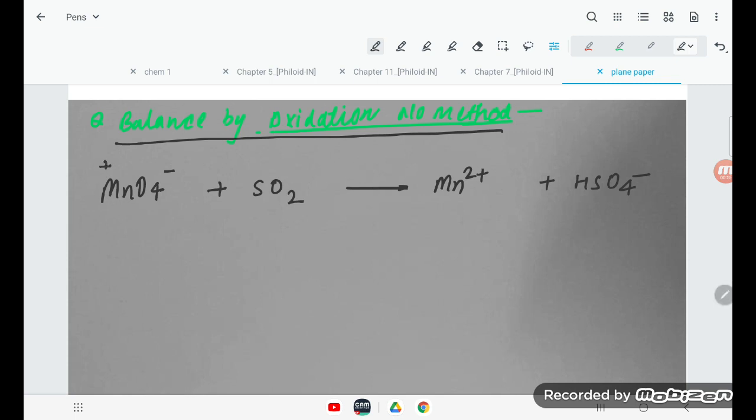Here it will be +7, how? 4 oxygen times -8 plus 1 equals +7. Here sulfur is +4. And here, how much? 4 oxygen times -8 minus 2 hydrogen equals +6 for sulfur. You can calculate by your own way also, there is no exception. I am not calculating this in detail.